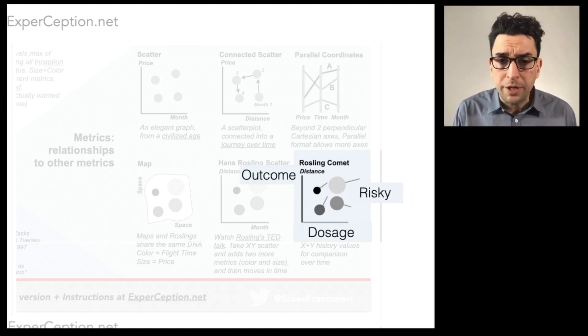You can imagine running a research study, and you have participants in the study, and you're giving them some drug or treatment. Along the x axis, you could put the dosage and the y axis you could have the outcome, how are they doing. And then you could have the size of the bubble maybe indicate their initial risk factors coming into the study.